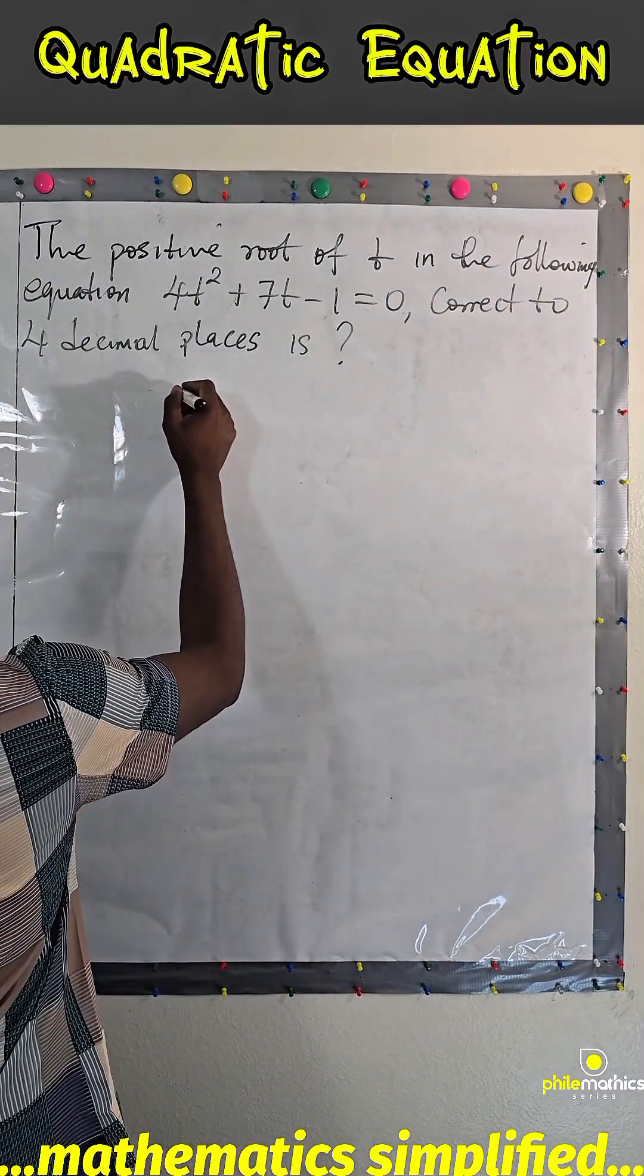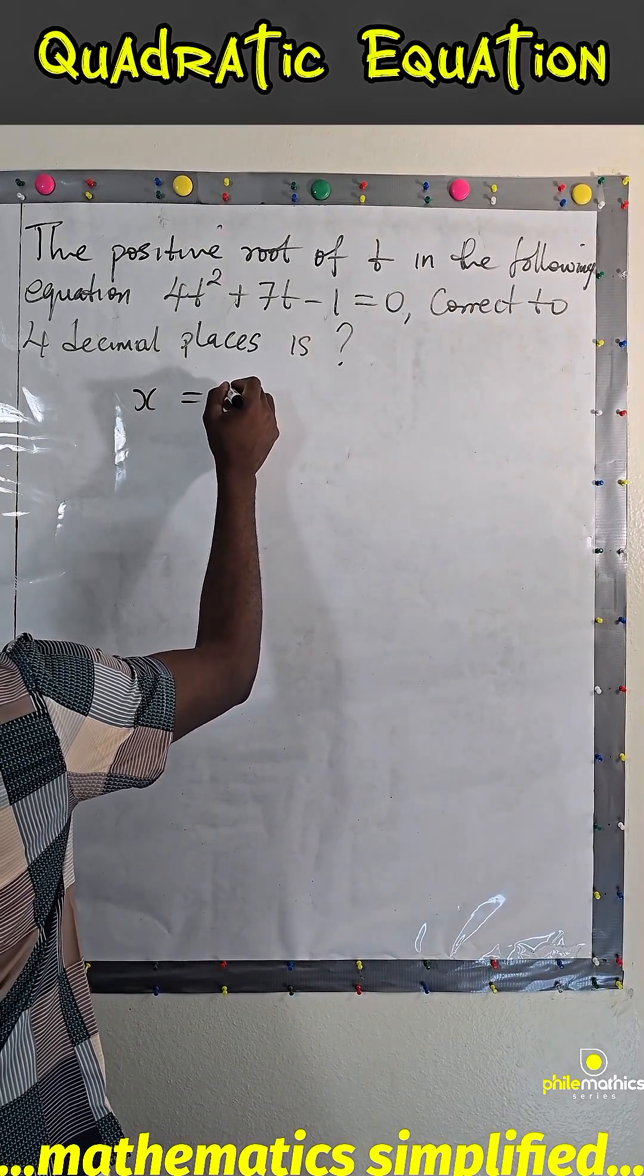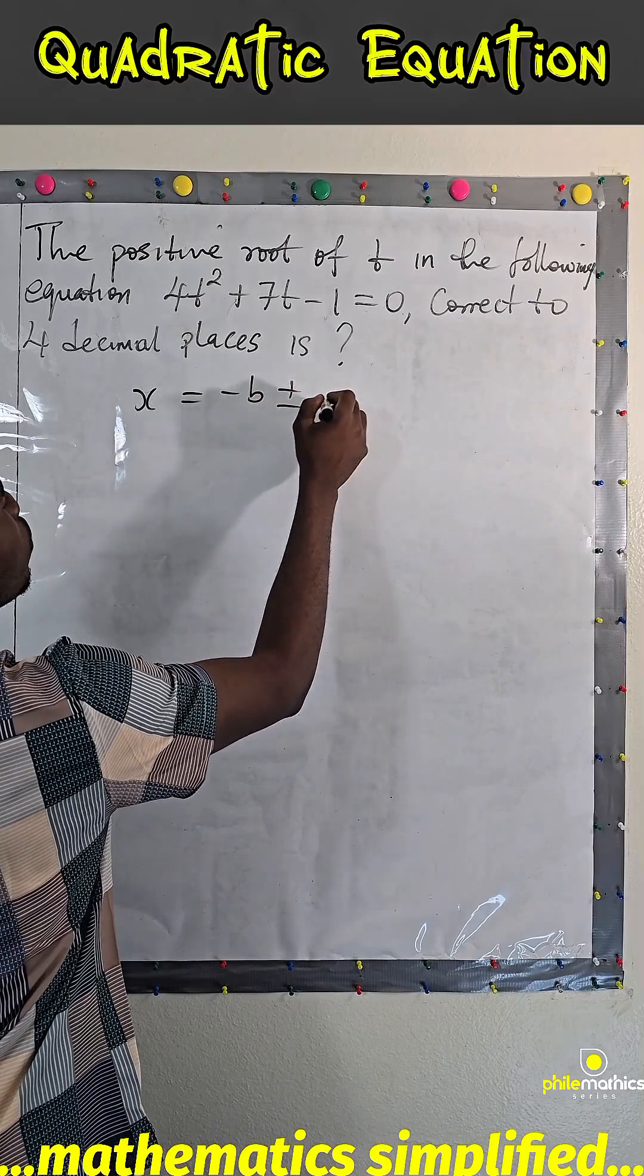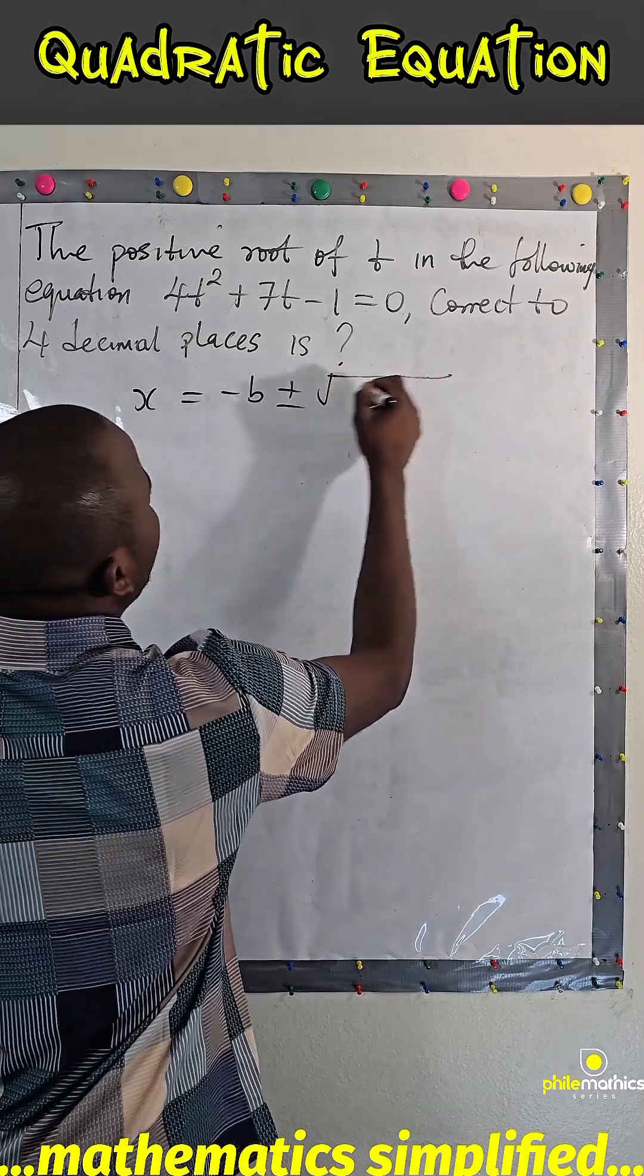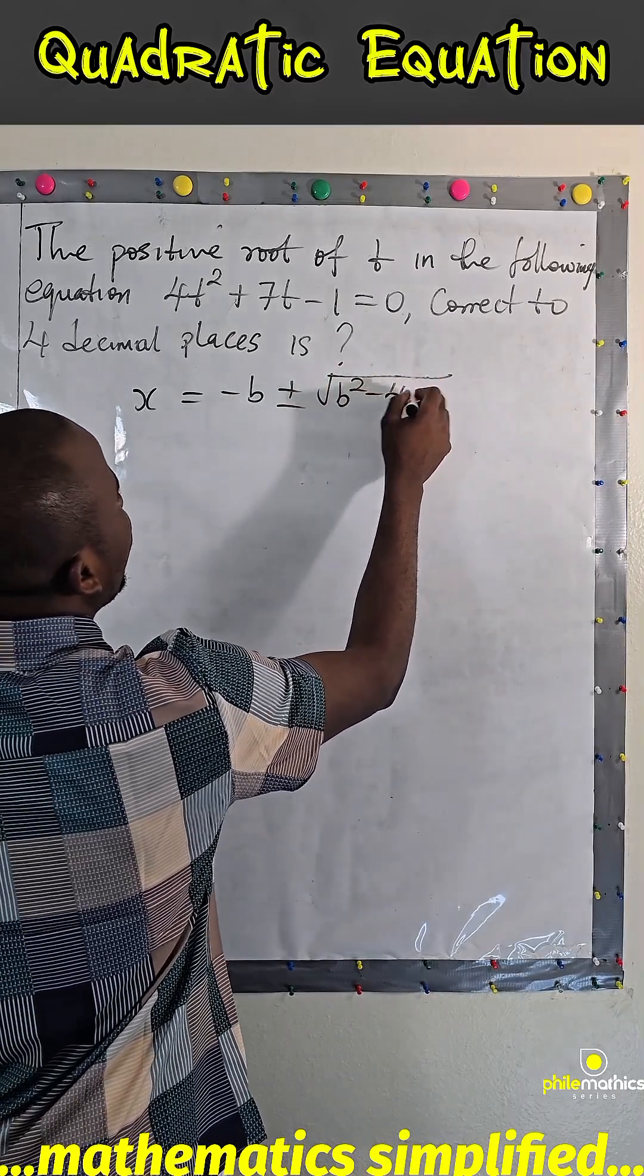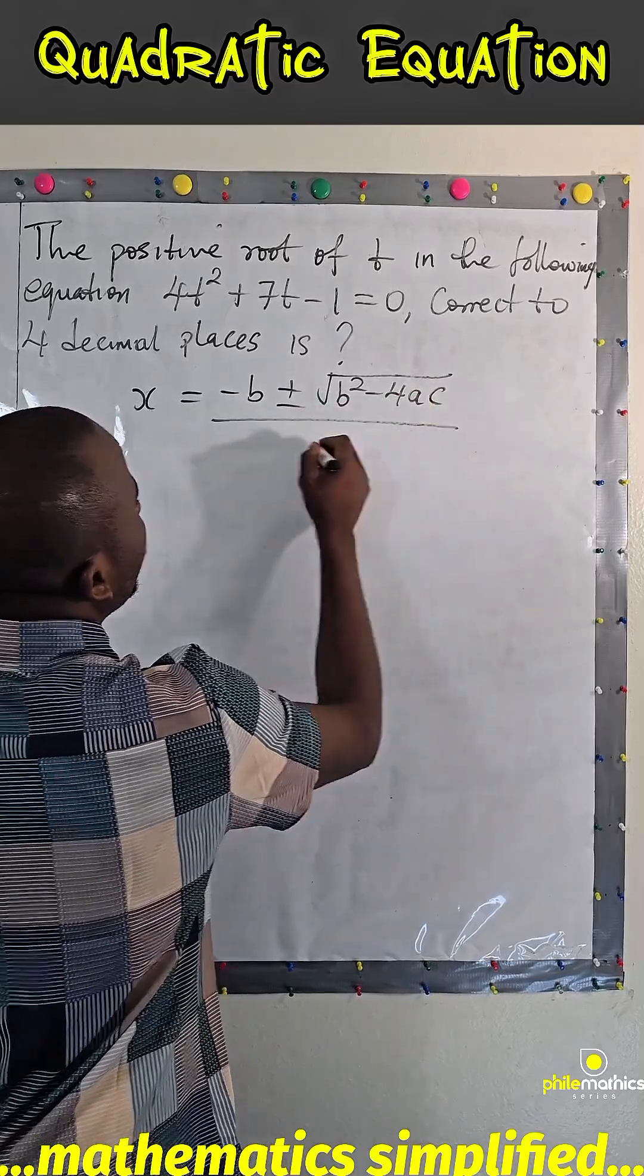Which says x = -b ± √(b² - 4ac) all over 2a.